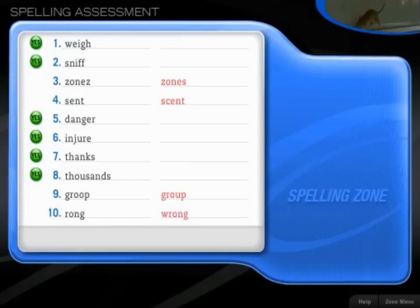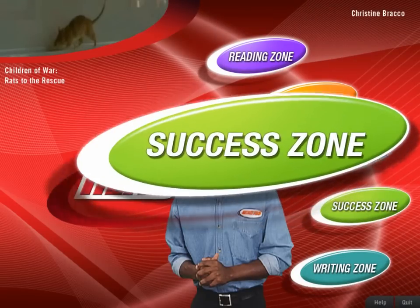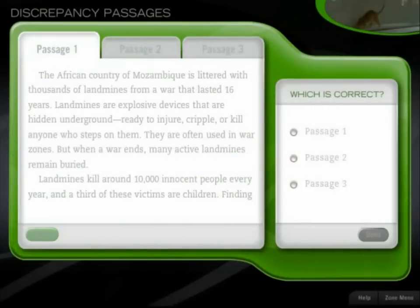Take a look at the correct spellings of the words you missed. I'll add these to the list of words we'll study together. Read these passages and pay attention to the details. Then decide which passage has all correct information.